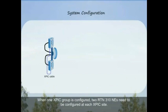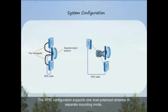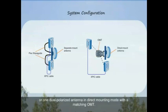When one XPIC group is configured, two RTN310 NEs need to be configured at each XPIC site. The combo ports of the two RTN310 NEs are connected using an XPIC cable. The XPIC configuration supports one dual polarized antenna in separate mounting mode or one dual polarized device antenna in direct mounting mode with the matching OMT.